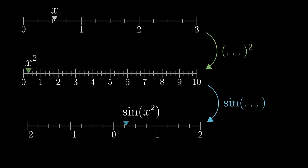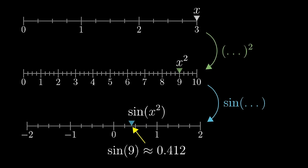As I shift around this value of x, maybe moving it up to the value 3, that second value stays pegged to whatever x squared is, in this case moving up to 9. And that bottom value, being sine of x squared, is going to go to whatever sine of 9 happens to be.